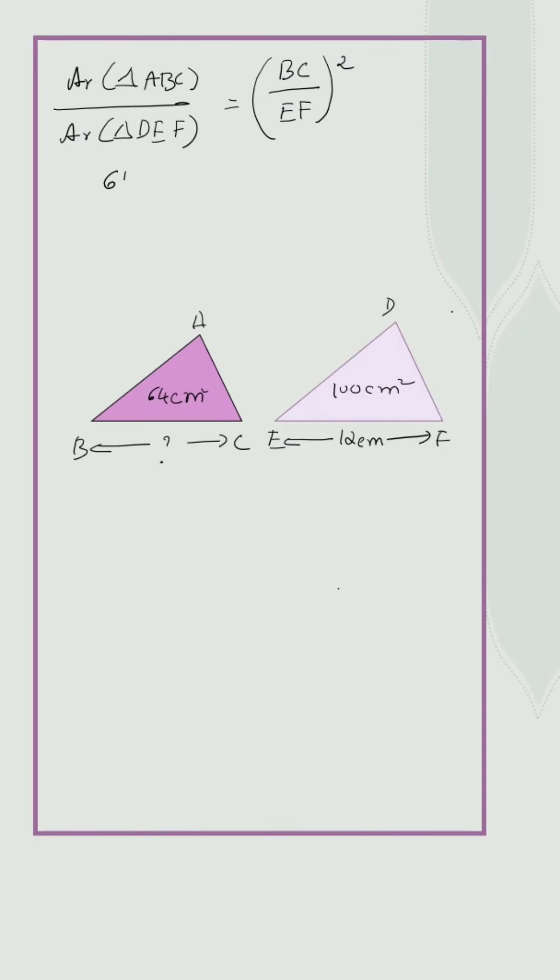Let us now substitute the values. 64 upon 100 is equal to BC upon 12 the whole square.